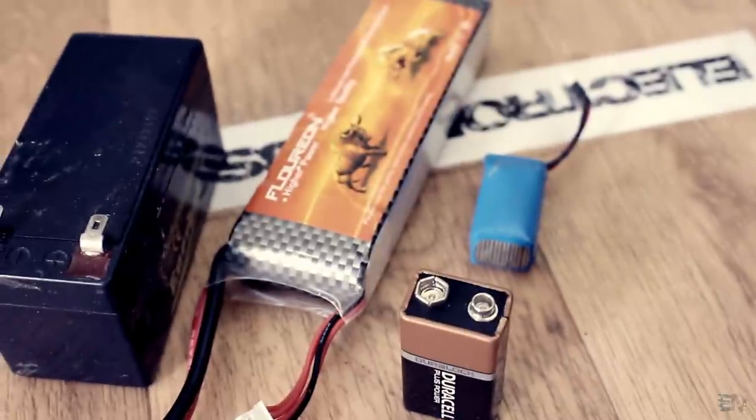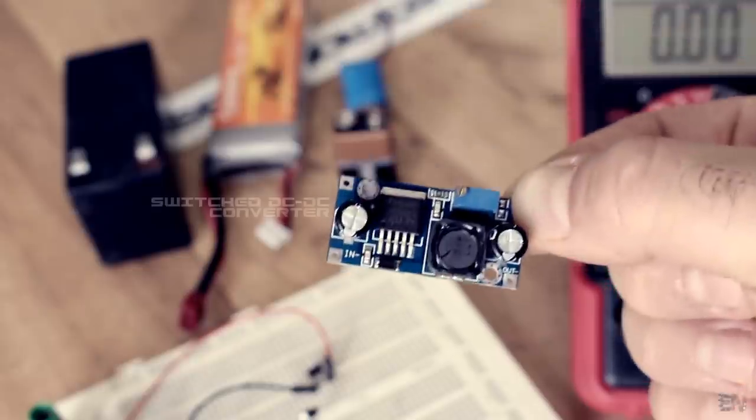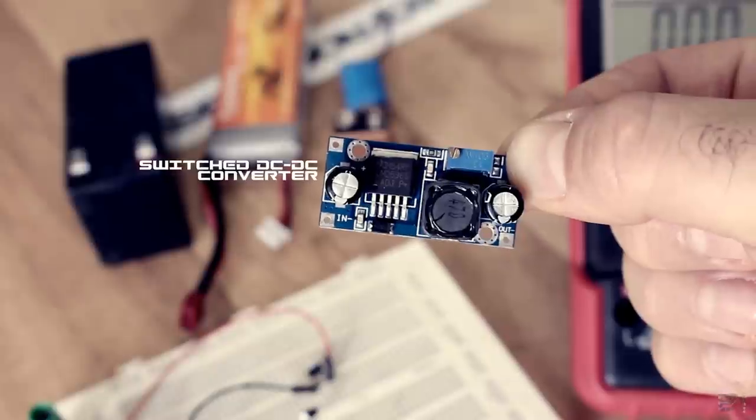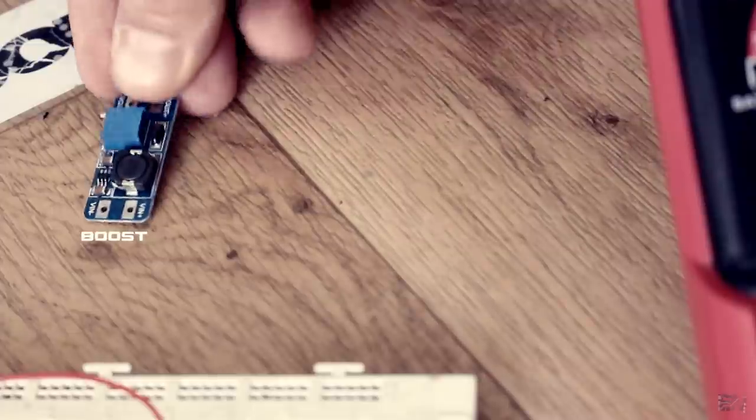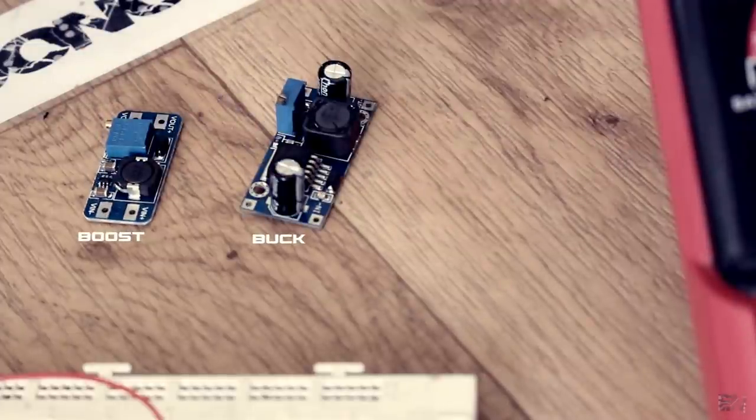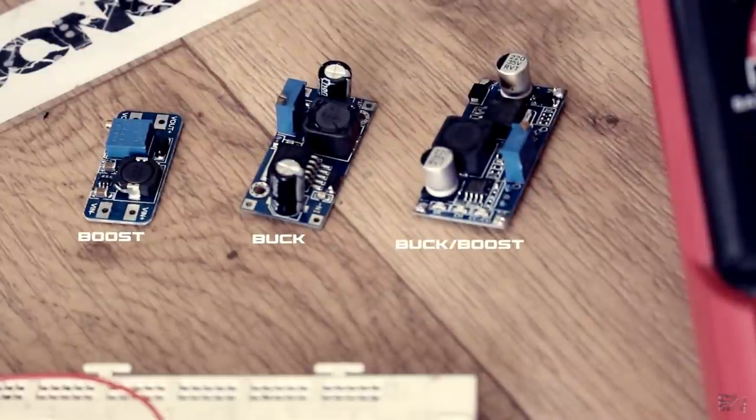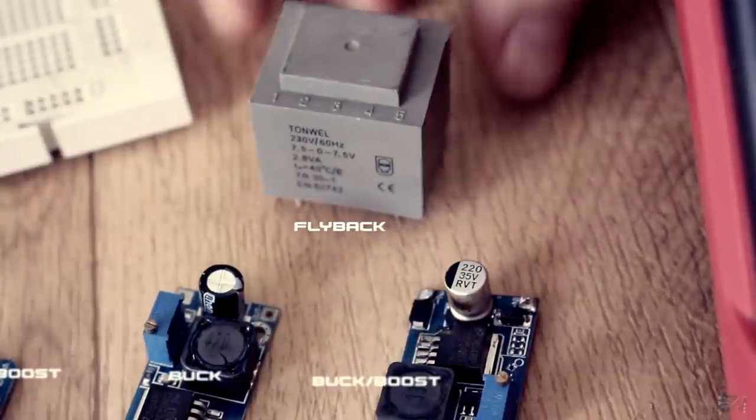The best and probably the most efficient way to reduce or increase voltage are switched DC to DC converters. In these videos, we will take a look at the boost converter, the buck converter, the buck and boost converter and probably we will look a bit at the flyback converter.